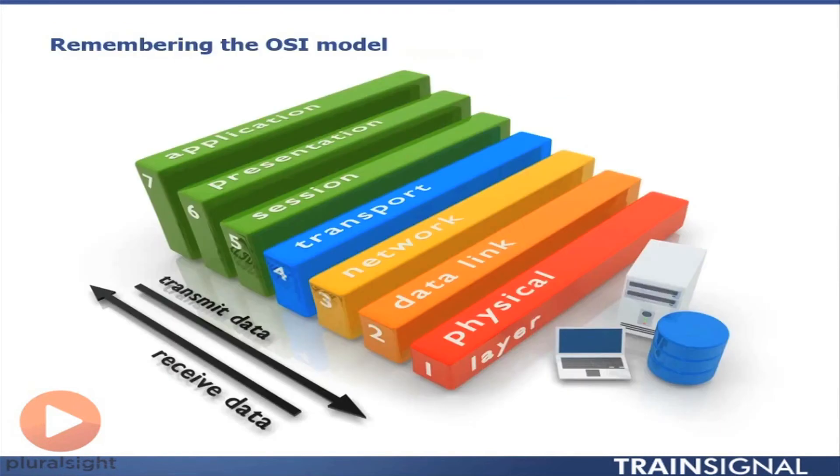Now let's take a look at all seven layers together. At the highest level, we have the application layer. Below that is the presentation and then the session layer. We move into the transport layer, the network layer, the data link layer, and finally the physical layer.